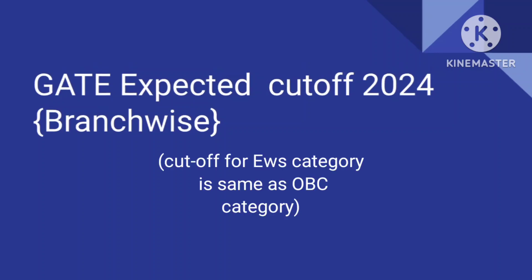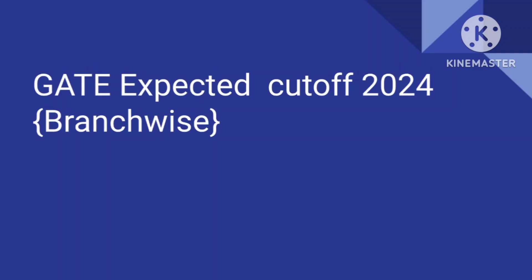In civil engineering, the expected cutoff according to my analysis is approximately 28.5 to 29, and for OBC category the cutoff is going to be around 26, and for SC and ST category the cutoff is approximately 21.5 to 22. This is for civil engineering. Now I am going to talk about environmental science and engineering.